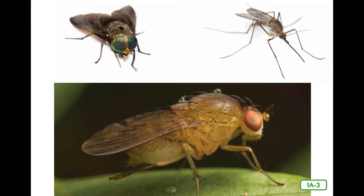Did you know that I could walk straight up a wall? I'll bet you can't do that! I have thousands of tiny hairs on my feet that act like suckers. I am a house fly, the most common type, but there are many other fly species on earth. A species is a group of plants or animals that are alike in important ways.